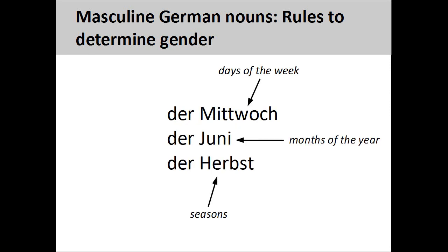Days of the week, such as 'Mittwoch' (Wednesday), and months of the year, such as 'Juni' (June), are masculine. Most seasons are also masculine nouns — for example, 'Herbst,' meaning 'fall.'